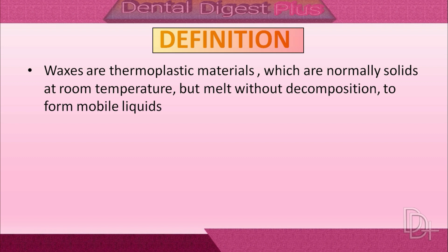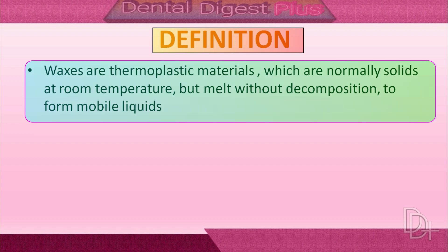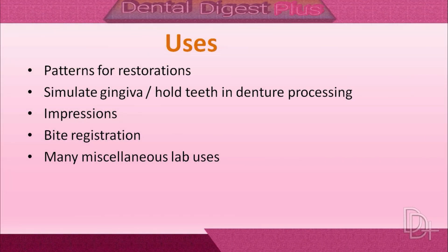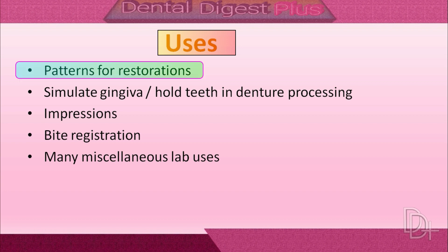Moving on to the definition: waxes are thermoplastic materials which are normally solids at room temperature but melt without decomposition to form mobile liquids. So waxes are materials that are solid at room temperature and liquid when their temperature rises, without losing their composition.